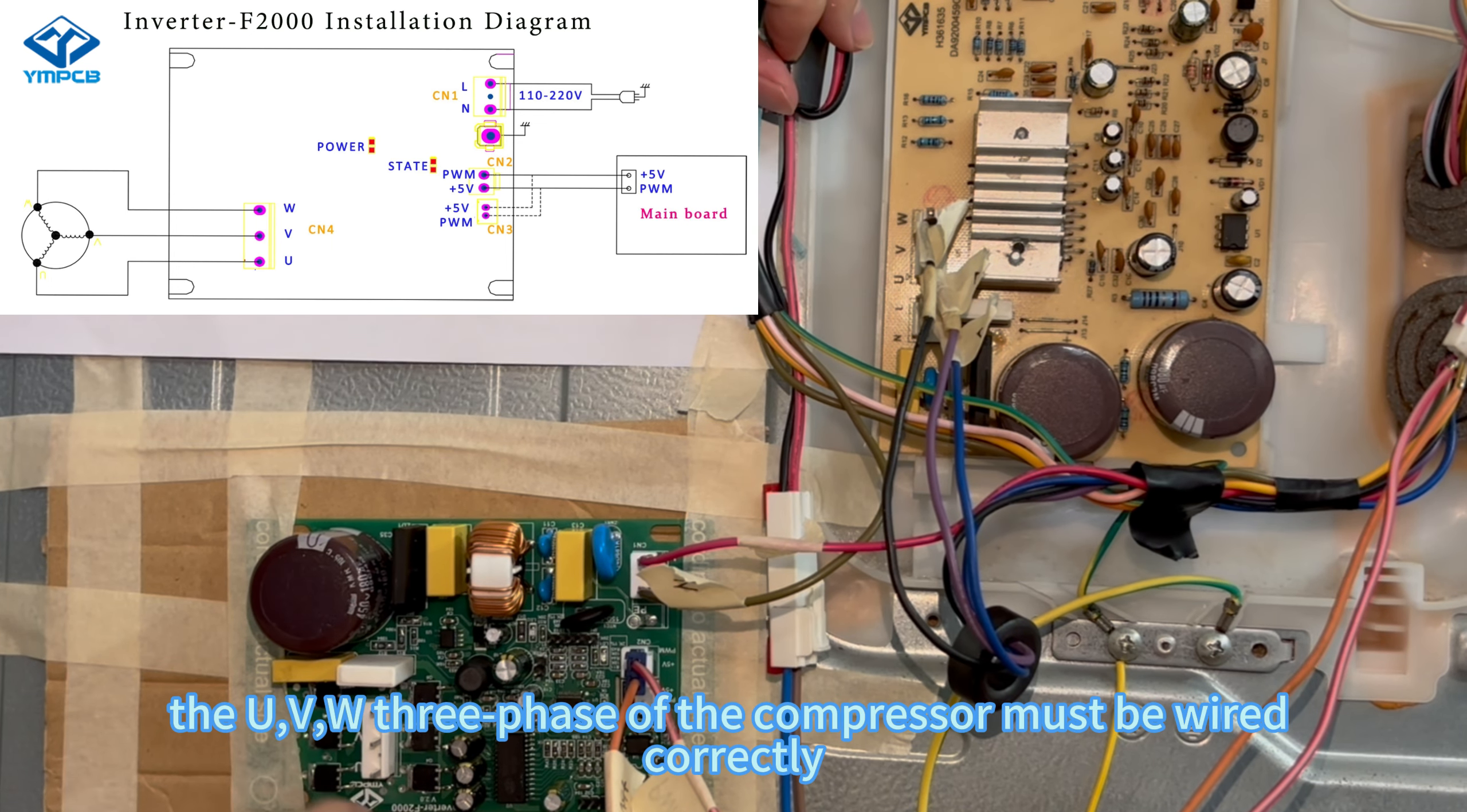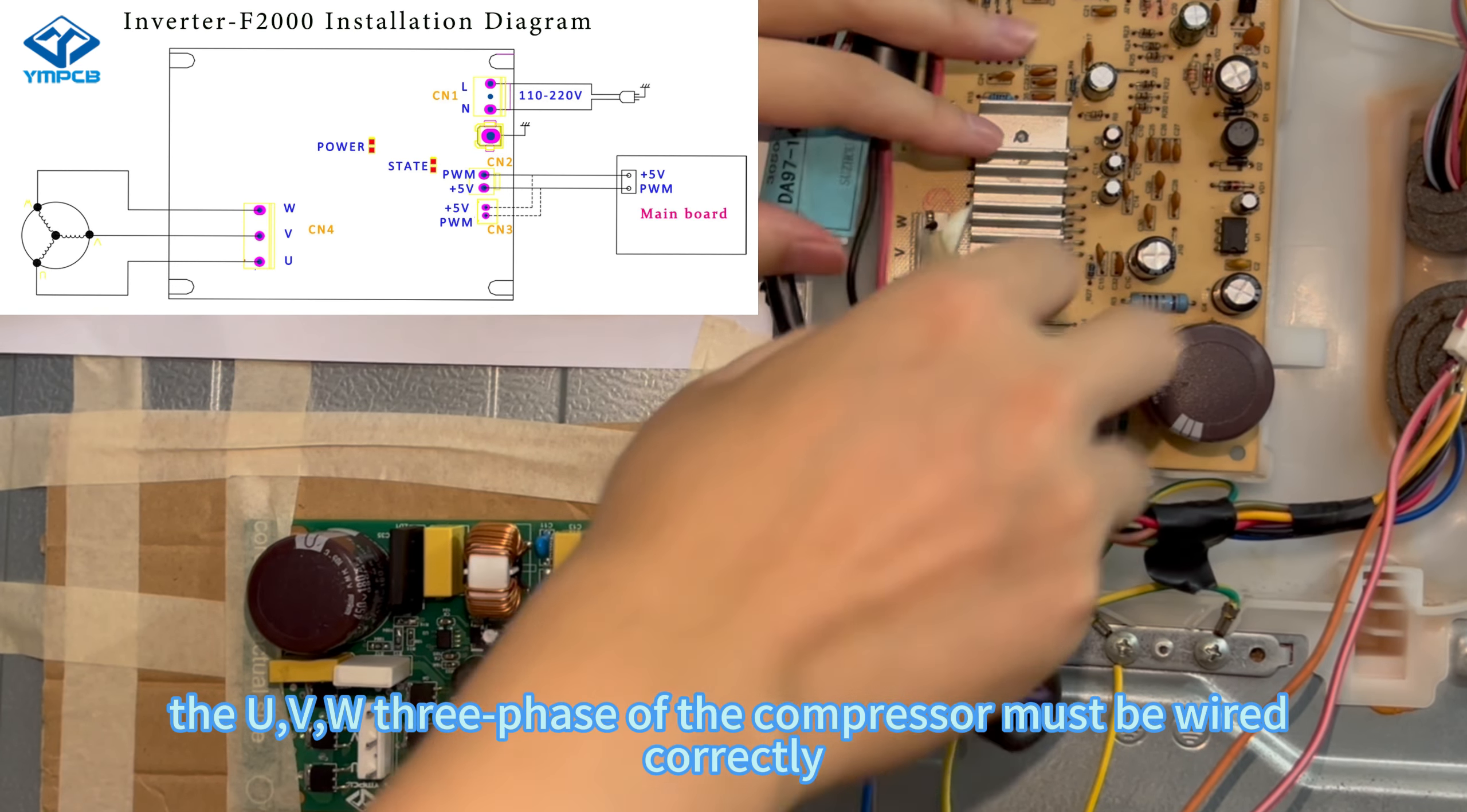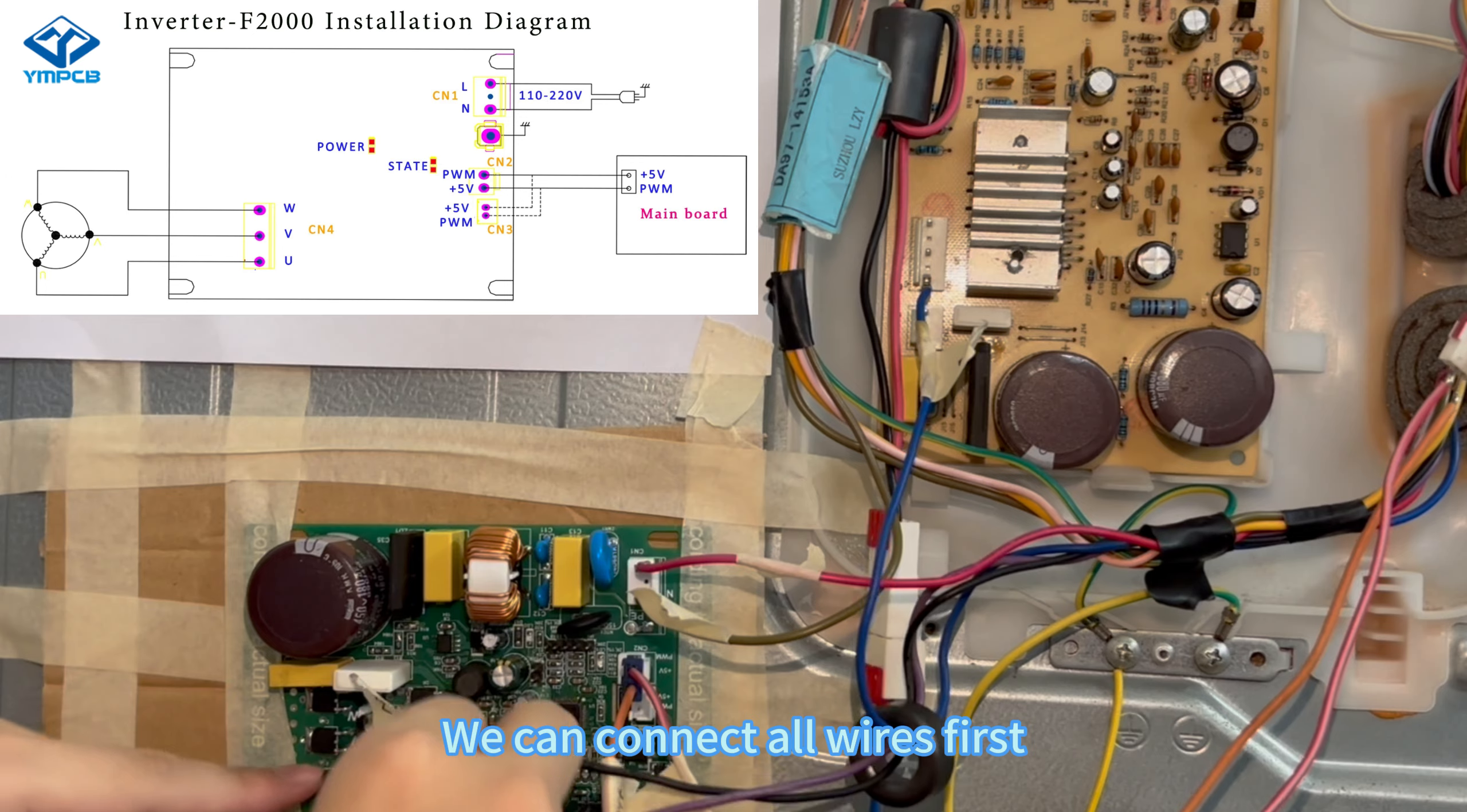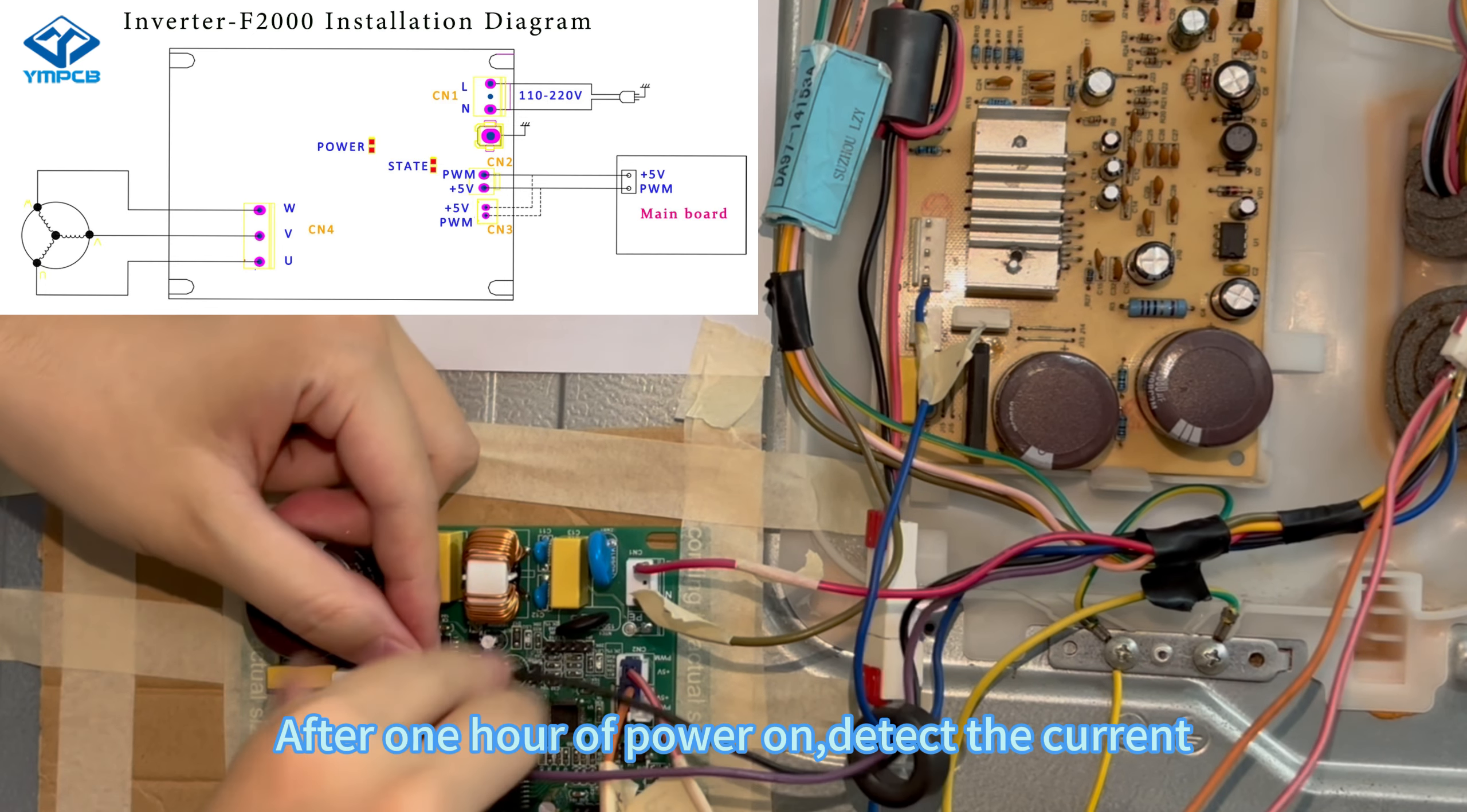Fourth, the UV-W 3-phase of the compressor must be wired correctly. If the original board is not marked with UV-W, we can connect all wires first. After one hour of power on, detect the current.